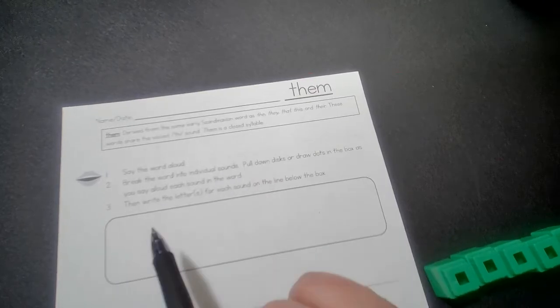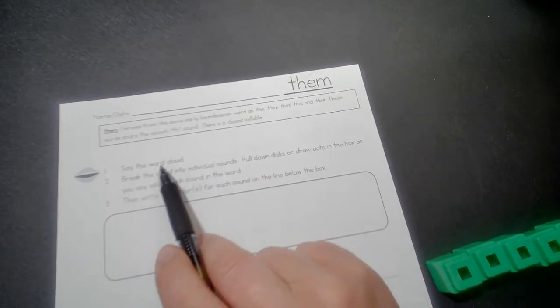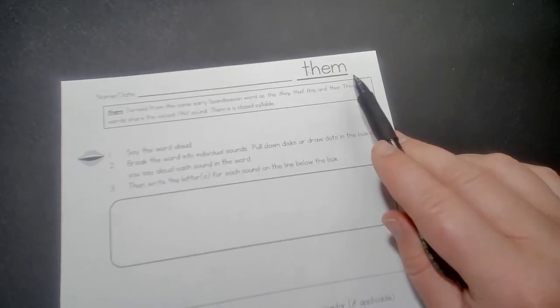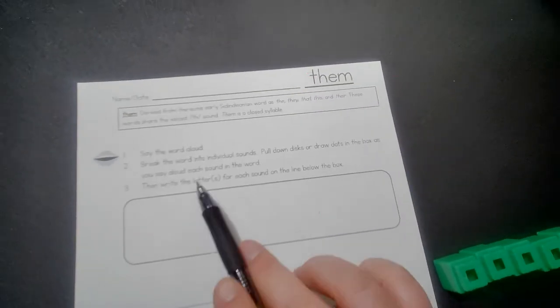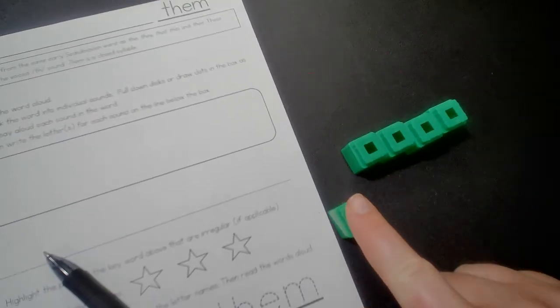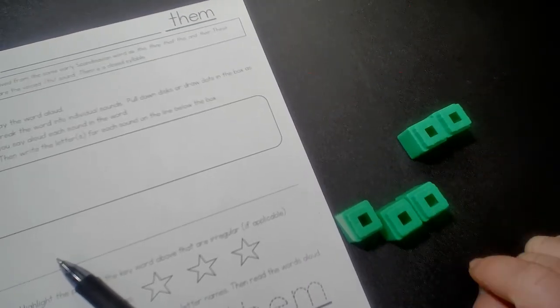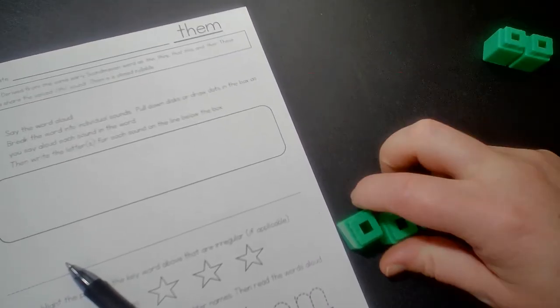Them is a closed syllable. So we're going to say the word out loud: them. Now break this out, break the word into individual sounds. This word has three sounds.